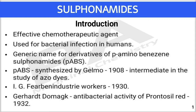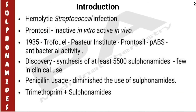Now we'll see the history of sulfonamides. Para-amino benzene sulfonamide was synthesized by Gelmo in 1908 as an intermediate in the study of azo dyes. Then in 1930, research workers of IG Farben industry worked on azo dyes having sulfonamide nucleus, and in 1932 Gerard Domagk recognized the antibacterial activity of an azo dye called Prontosil.